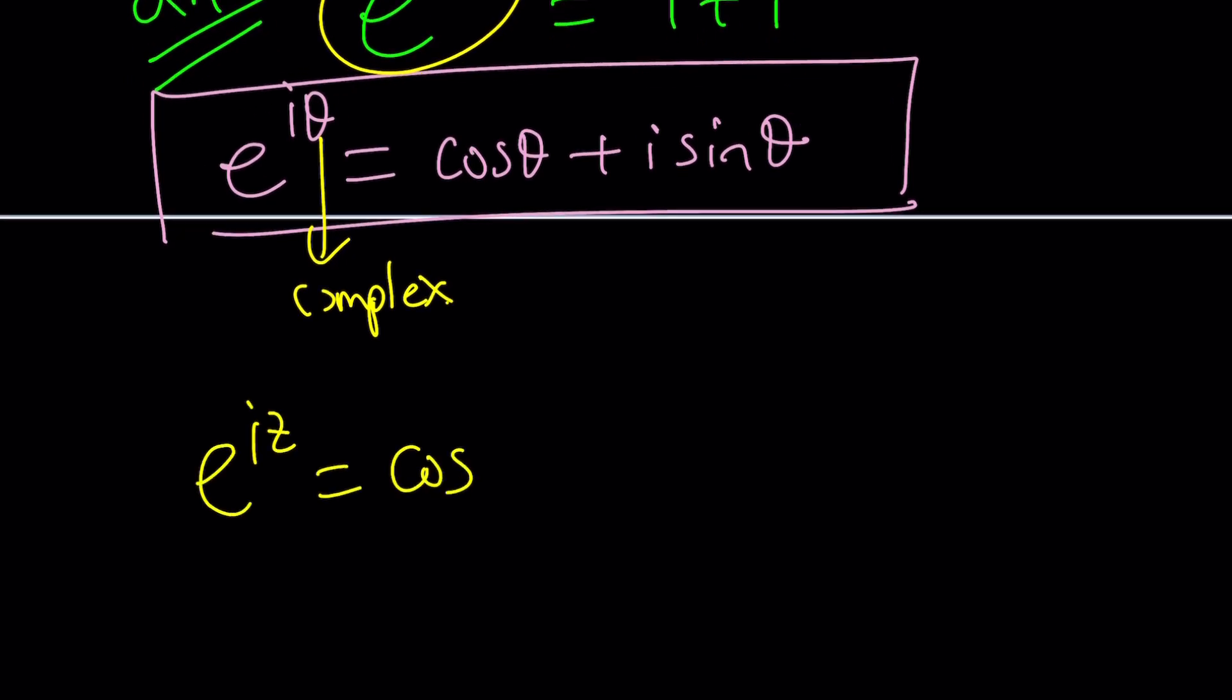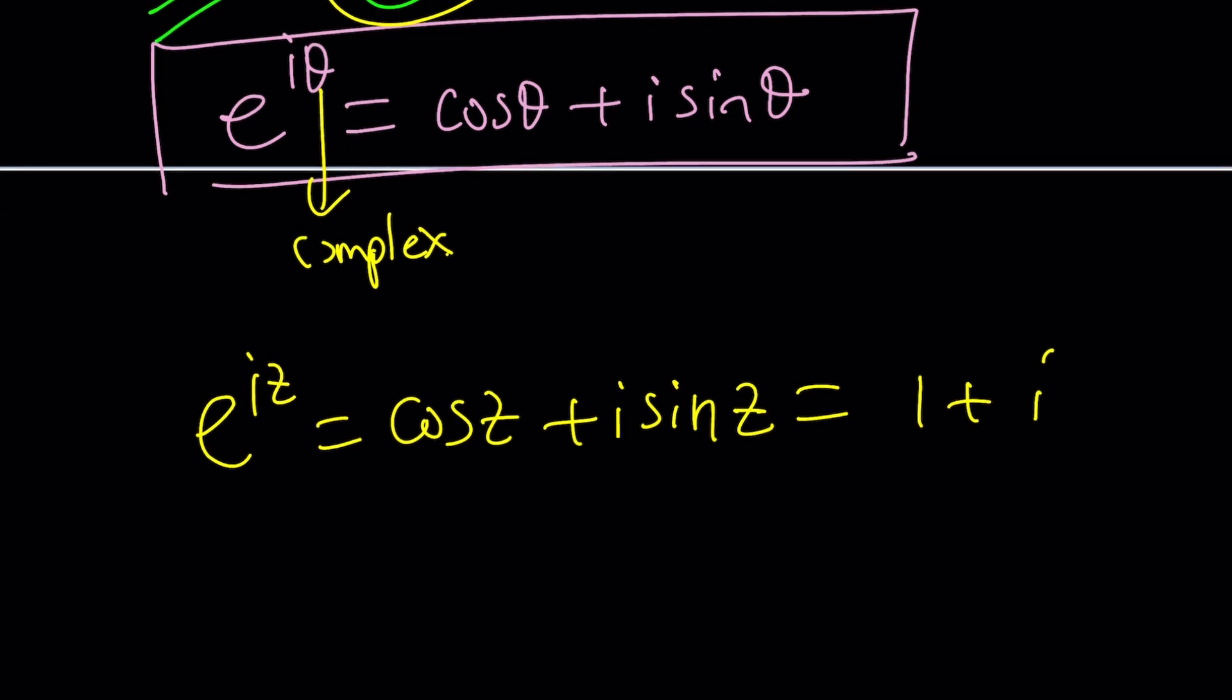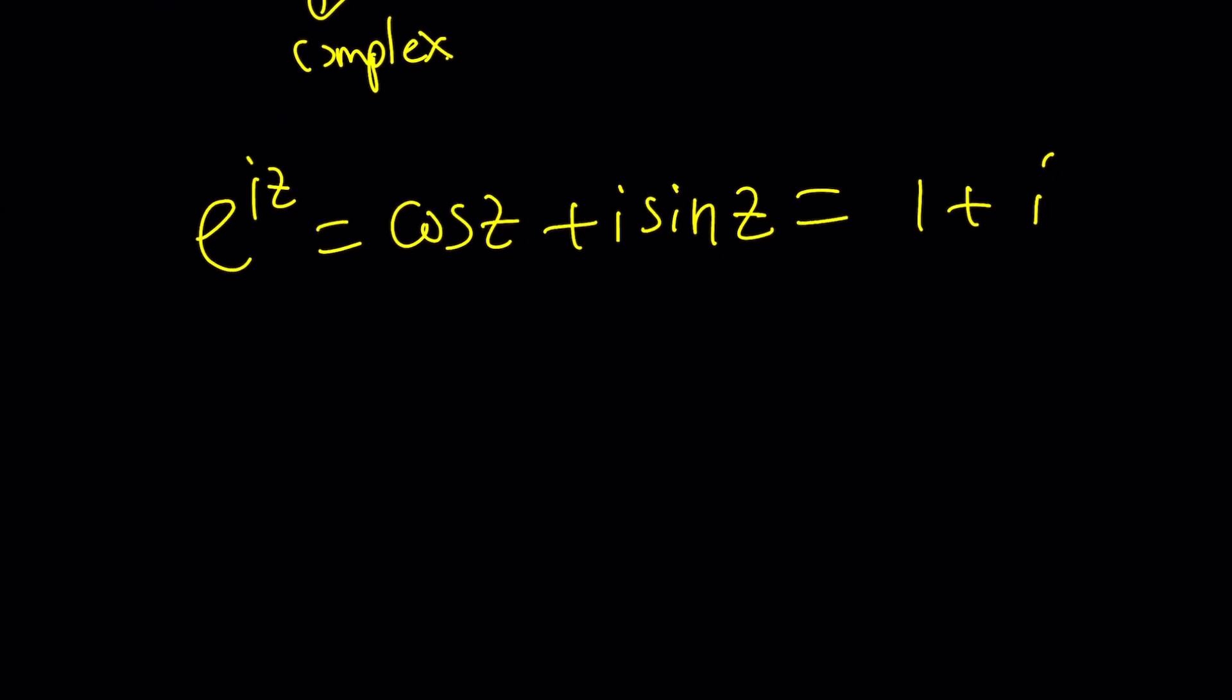But here, e to the iz can be written as cosine of z plus i sine of z. And I know that it's equal to 1 plus i. This is such a cool way to approach the problem, and hopefully we can solve it, right? No, unfortunately not. Sorry to disappoint you.